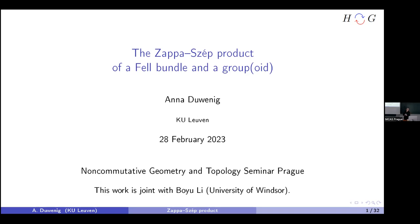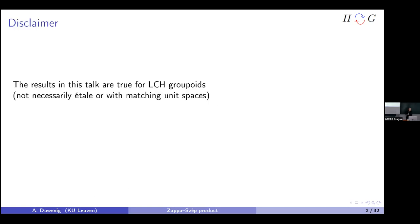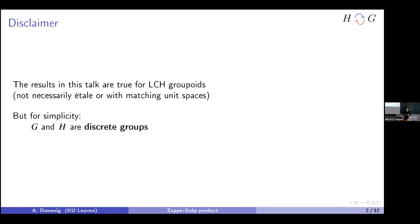Just a quick disclaimer: everything I'm going to talk about today will be true for locally compact Hausdorff groupoids. You can skip the Hausdorff condition if you put a little bit more work into it, and we don't even need matching unit spaces for Zappa-Szép products. For simplicity, I'll only talk about discrete groups, because even discrete groups are going to be complicated enough. If you're wondering why I keep saying 'group' — it also works for groupoids.